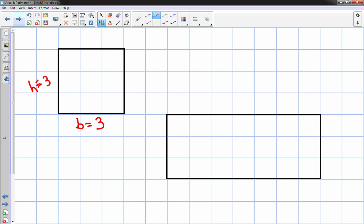The reason for using graph paper is you can visually see the squares inside the shape and you can count them. So this square has an area of 9 square units.